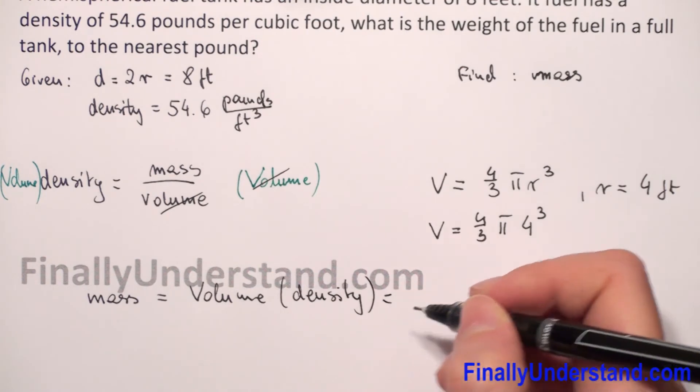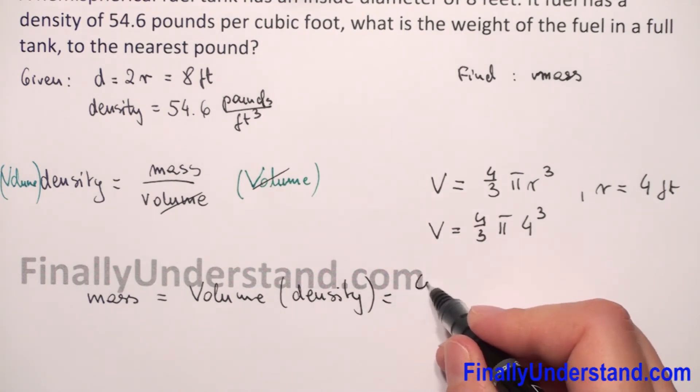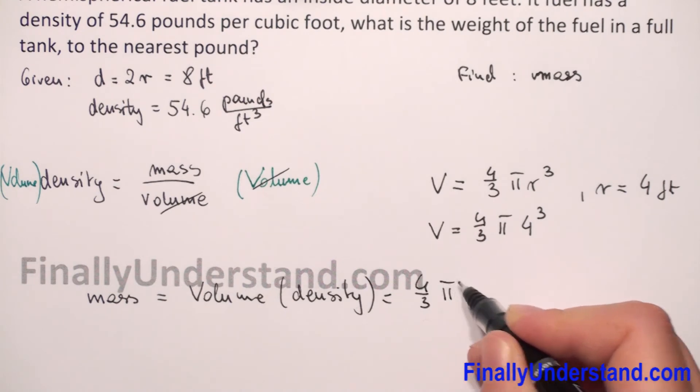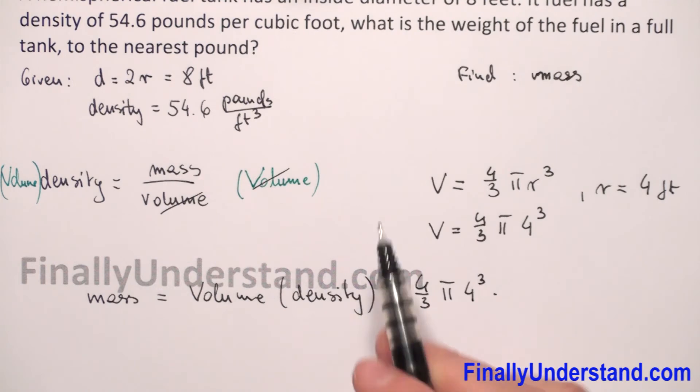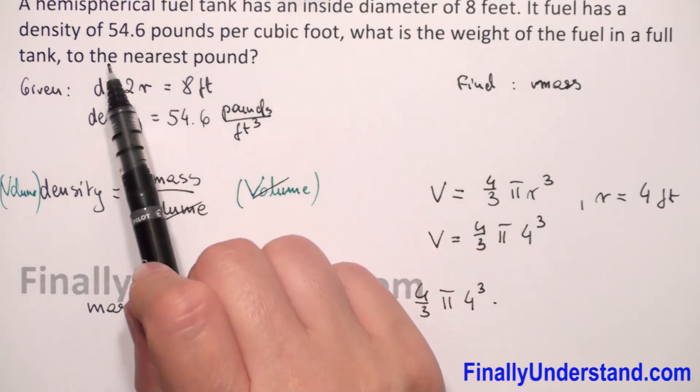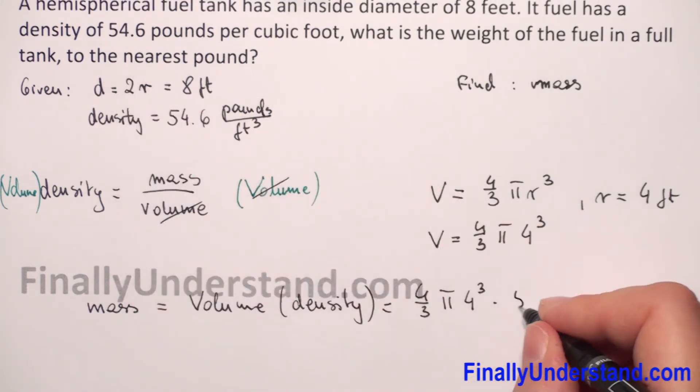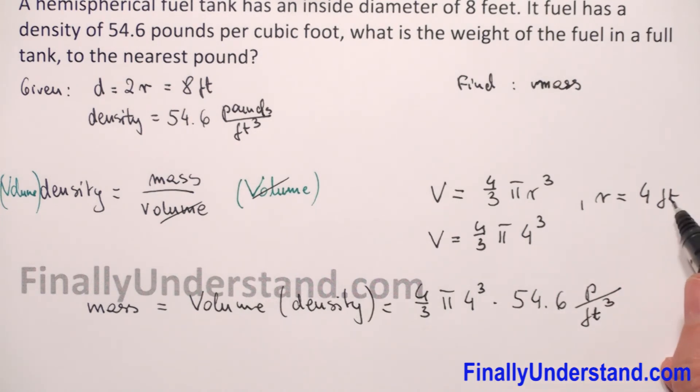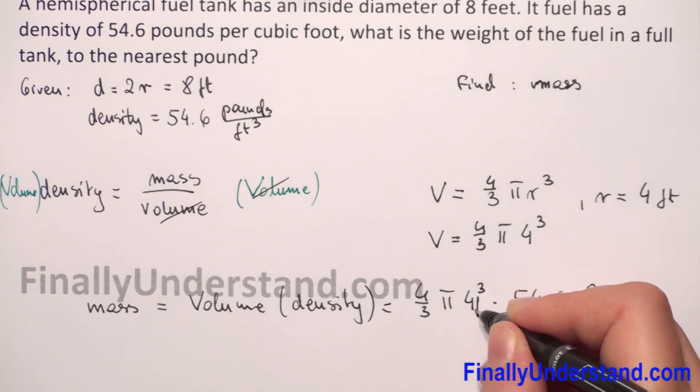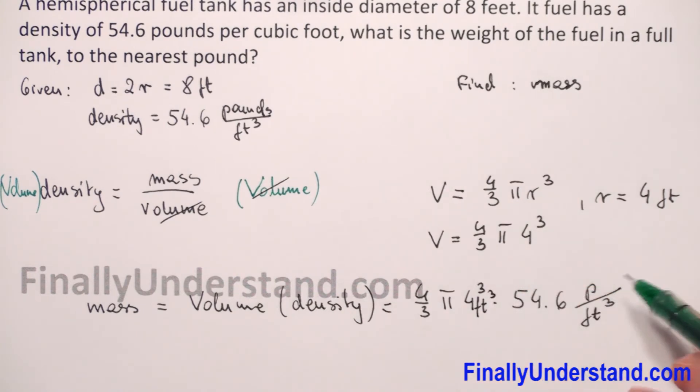So mass equals volume, which is 4 over 3 pi times 4 to the 3rd power, times density, which is 54.6 pounds over cubic foot. We have 4 cubed feet, so we can reduce cubic feet.